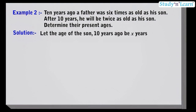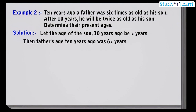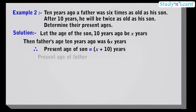Let the age of the son 10 years ago be x years. Then father's age 10 years ago was 6x years, because it is given in the question that 10 years ago, father was 6 times the age of his son. Therefore, the present age of the son is x plus 10 years, and the present age of the father will be 6x plus 10 years.